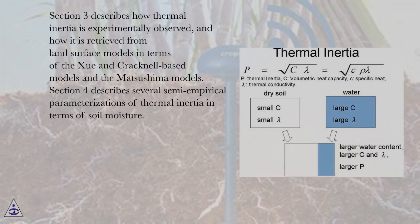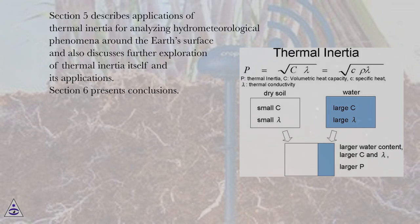Section 4 describes several semi-empirical parameterizations of thermal inertia in terms of soil moisture. Section 5 describes applications of thermal inertia for analyzing hydrometeorological phenomena around the Earth's surface and also discusses further exploration of thermal inertia itself and its applications. Section 6 presents conclusions.